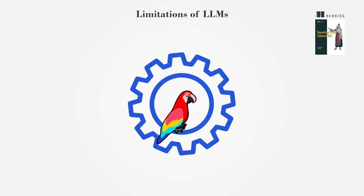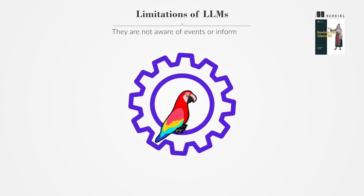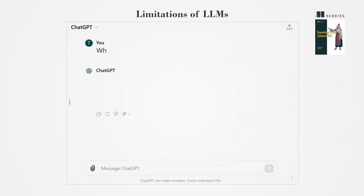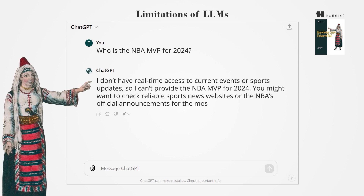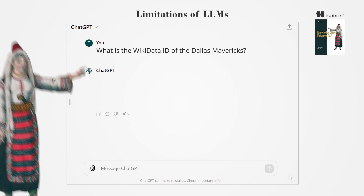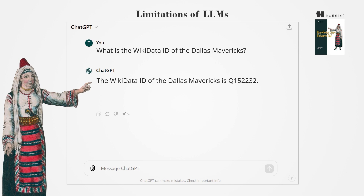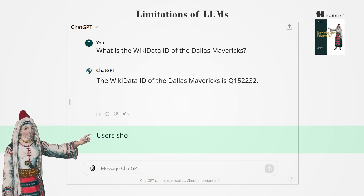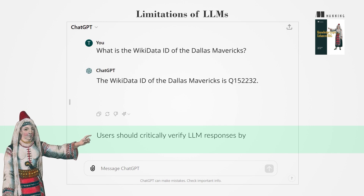LLMs have limitations. They are not aware of events or information that are not included in their training dataset. For instance, ChatGPT's knowledge is up to October 2023, so it cannot provide information about events that occurred after this date. LLMs can also generate outdated responses and hallucinations, where the model produces factually incorrect information. Users should critically verify LLM responses by consulting reliable external sources.